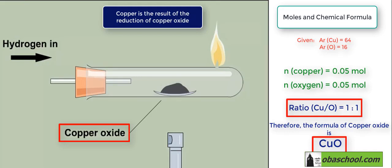This is how we can find the formula of a compound by the calculation of the number of moles and finding the ratio of these calculations.